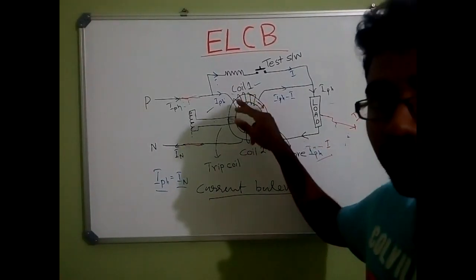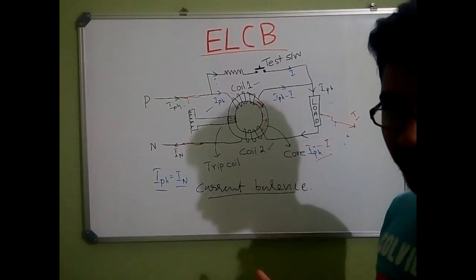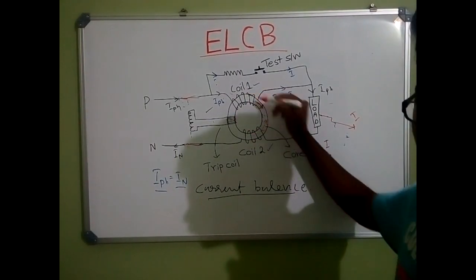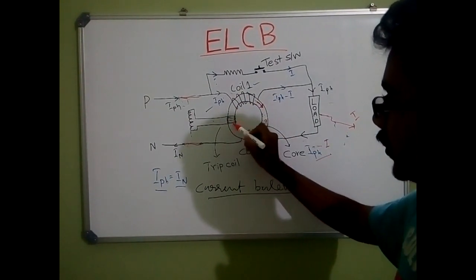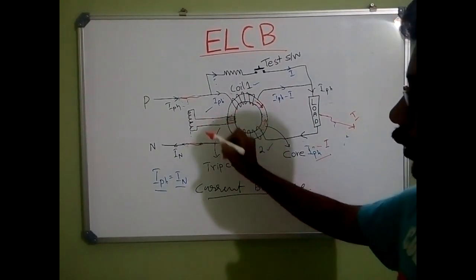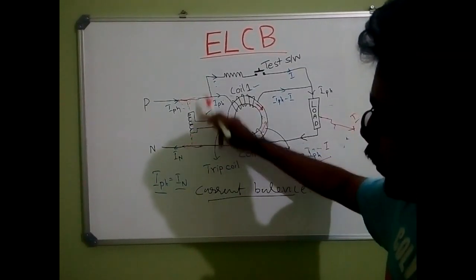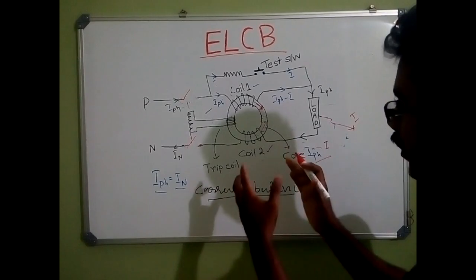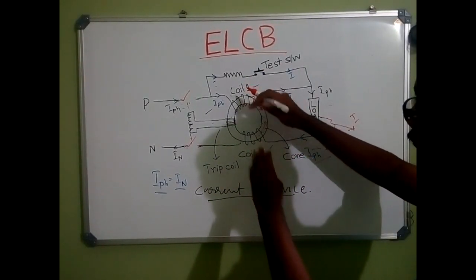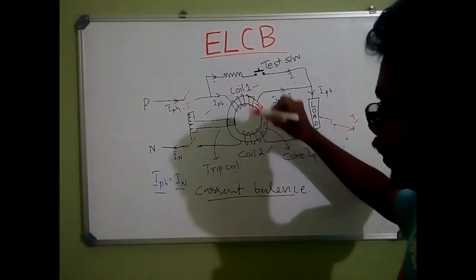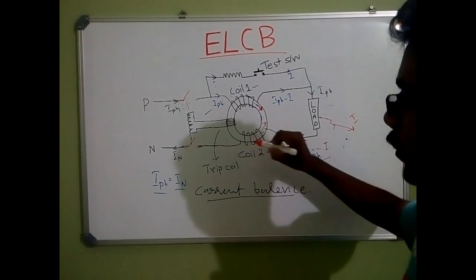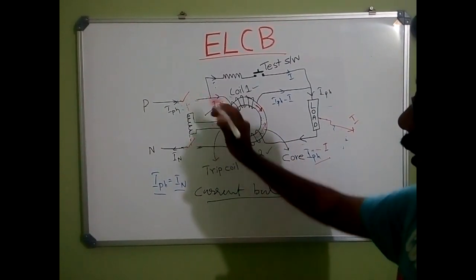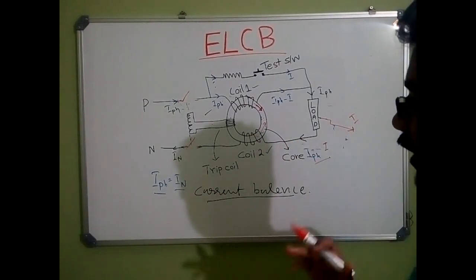The MMF produced by Coil 1 and MMF produced by Coil 2 are different. So there exists a net MMF in this magnetic core. Due to that net MMF, an EMF is induced in the trip coil, and through some mechanism, the switches are open-circuited by the trip coil. When leakage current happens, the current is unbalanced, so the net MMF activates the trip coil and isolates the supply from the load. This is how an ELCB works.